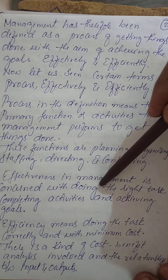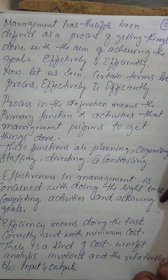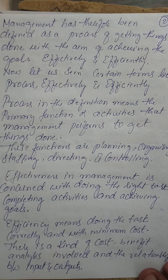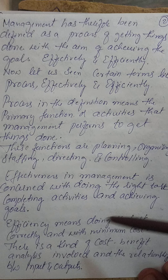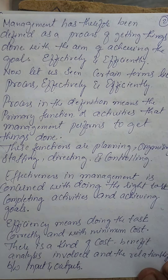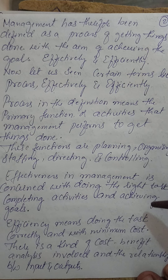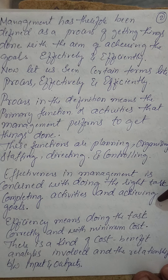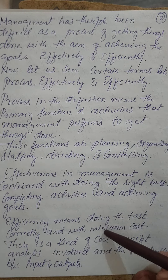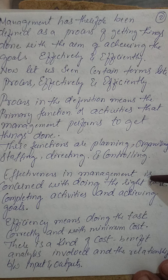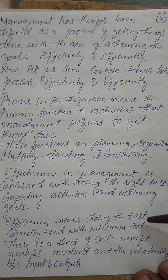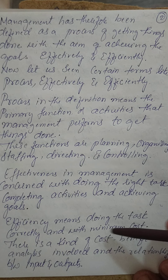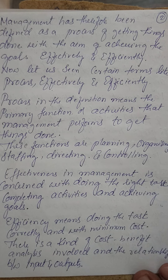Effectiveness in management means doing the right task, completing activities, and achieving goals. If management is effective, goal achievement takes place in a very effective manner. Efficiency means doing the task with minimum cost — taking the right task for effectiveness while keeping cost minimum and getting maximum work done from employees.